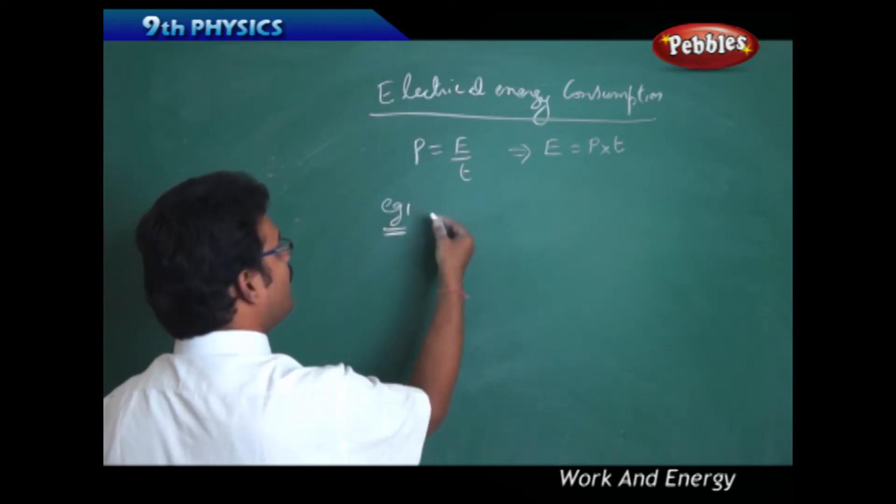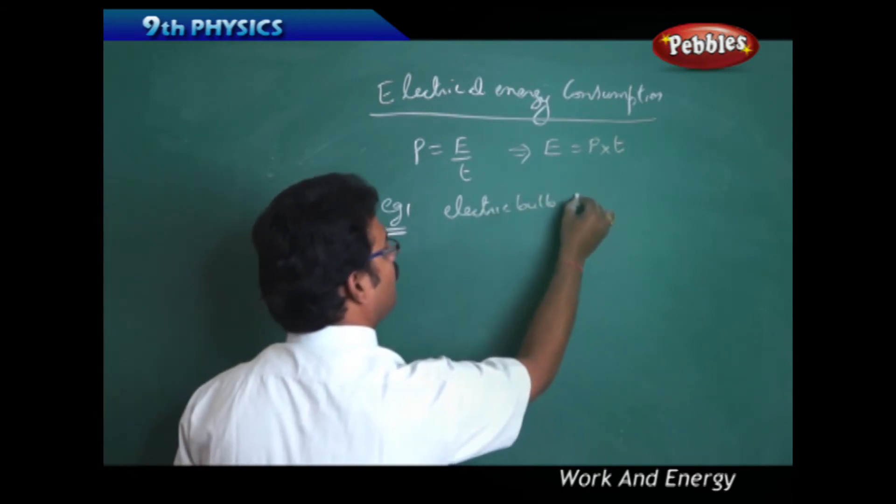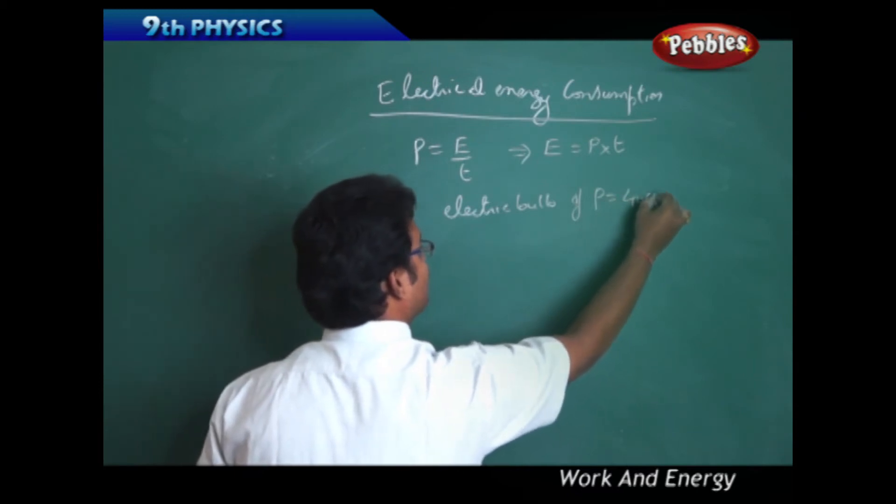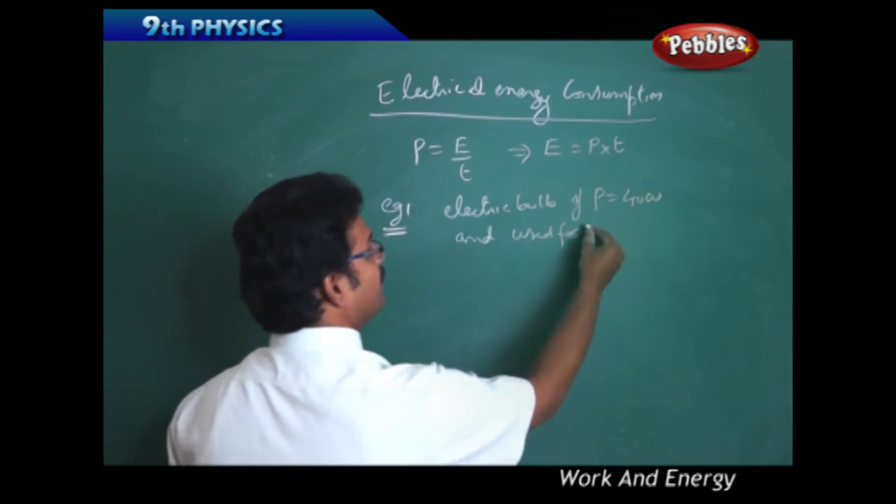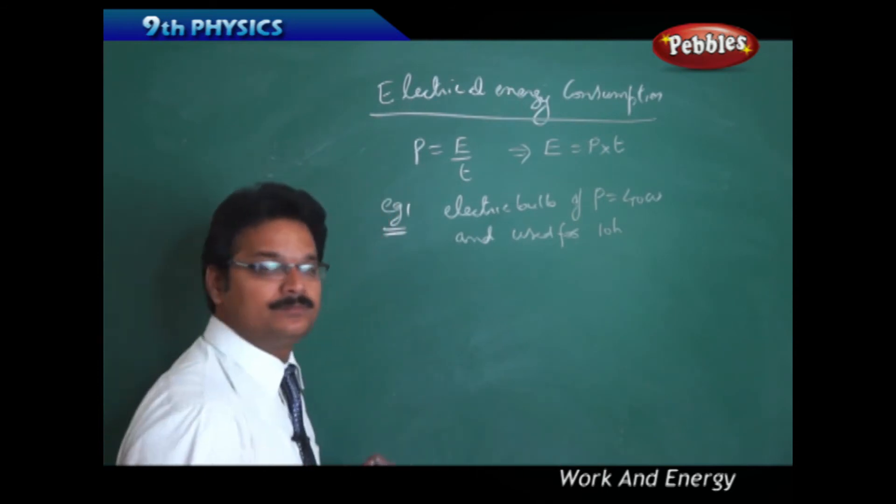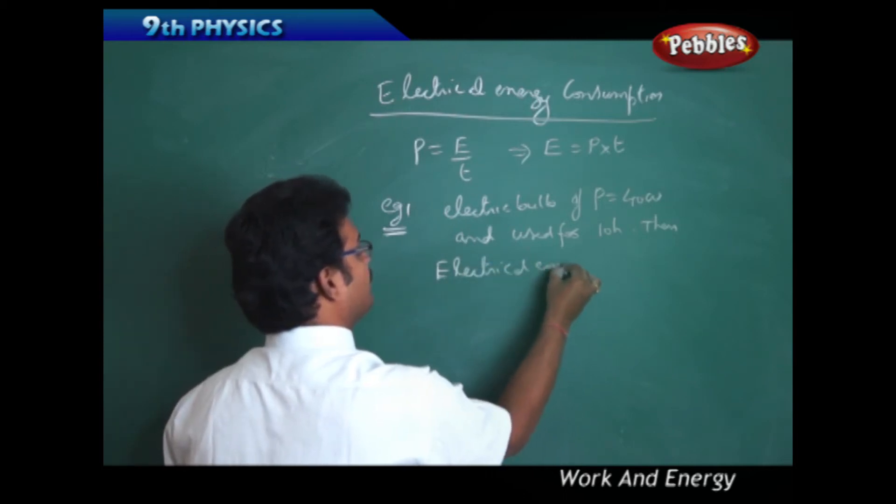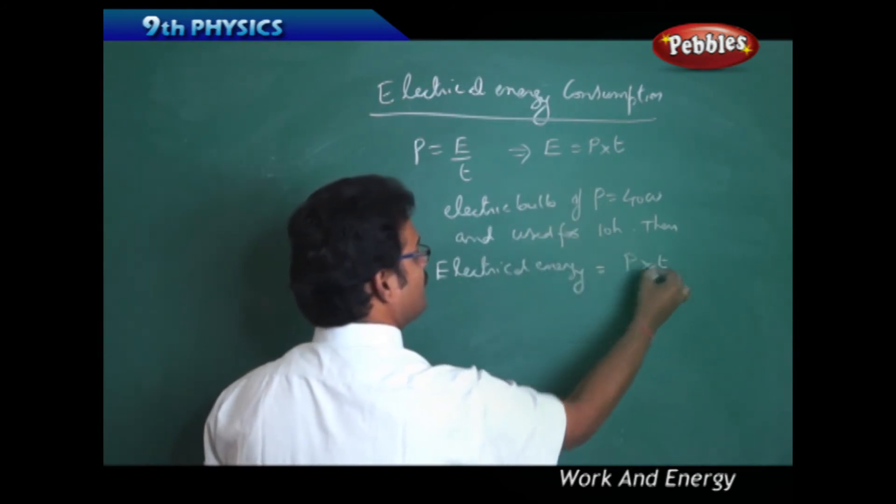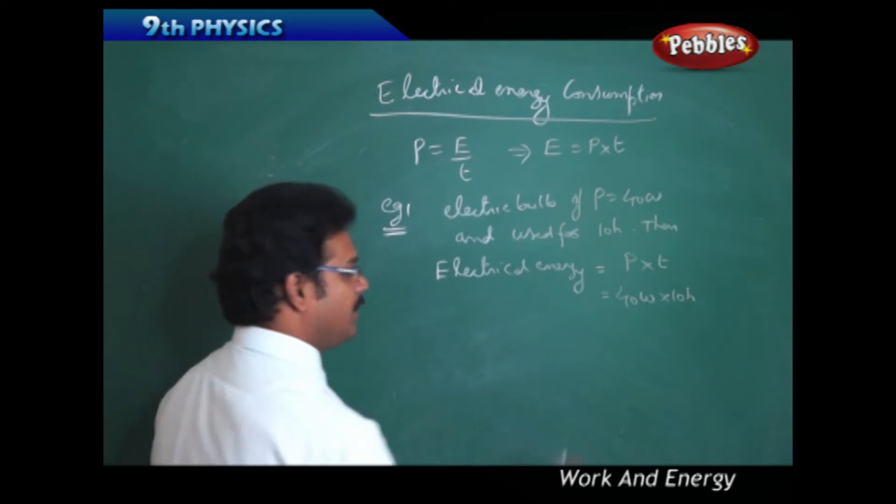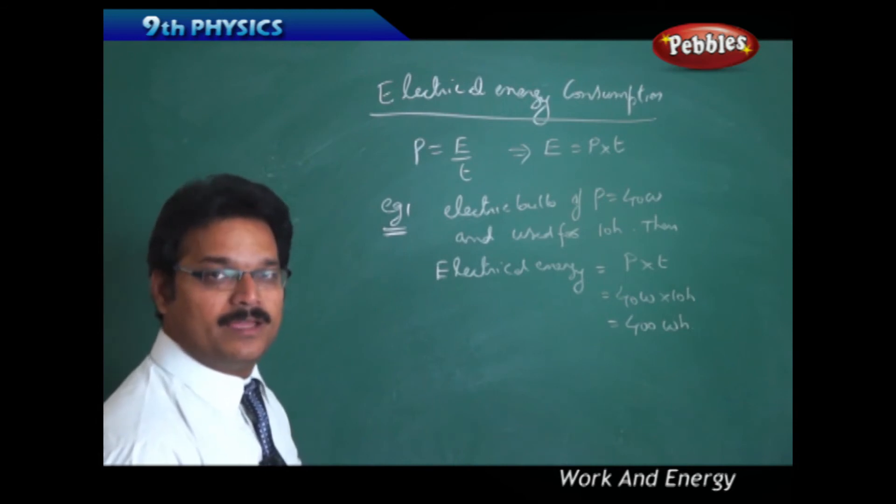For example, see the example: you have taken an electric bulb of power 40 watts and used for 10 hours. Then the electrical energy consumed is how much? See, you have power into time, so power is 40 watts and time is 10 hours. Then you can say 400 watt hour.